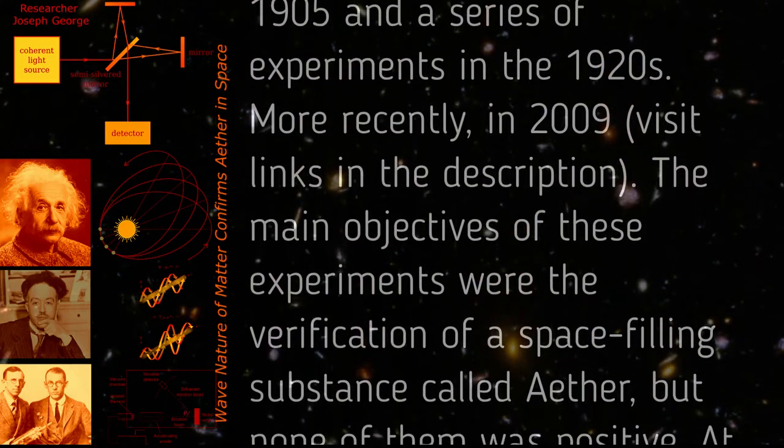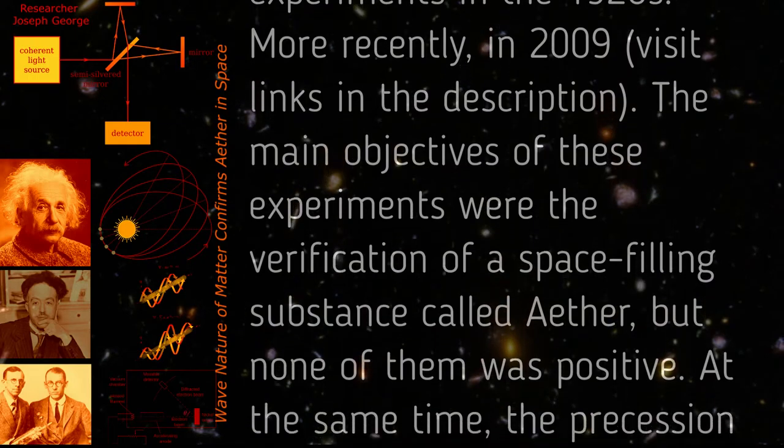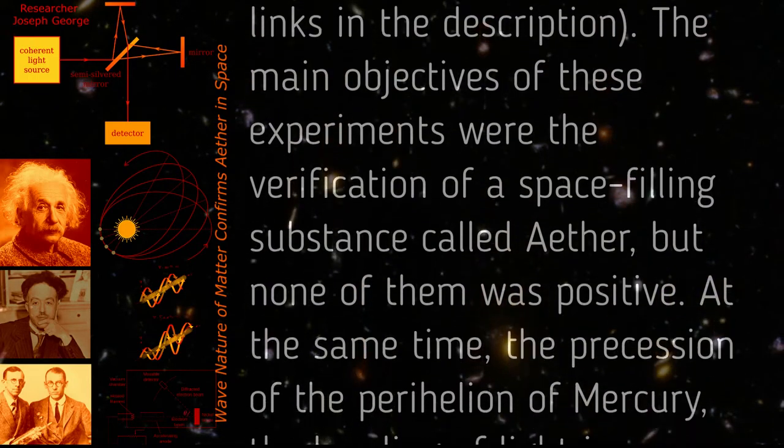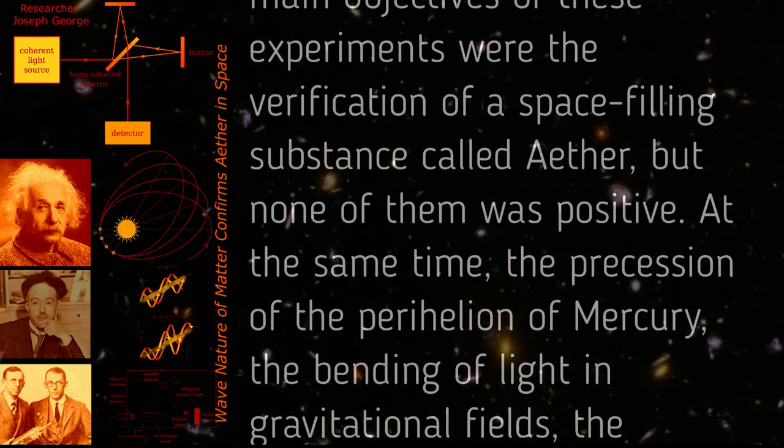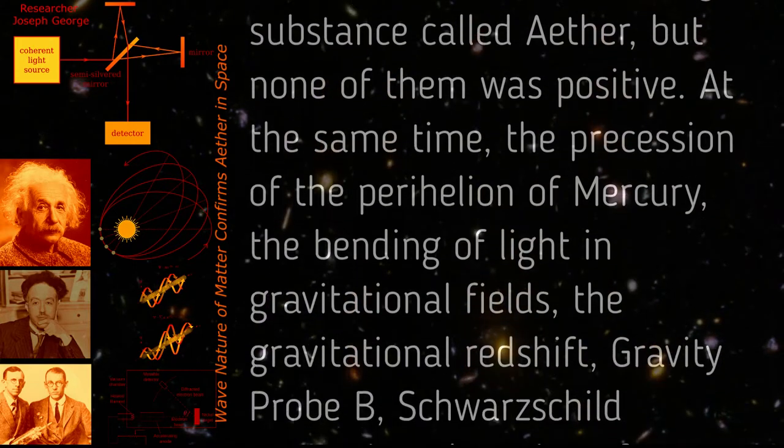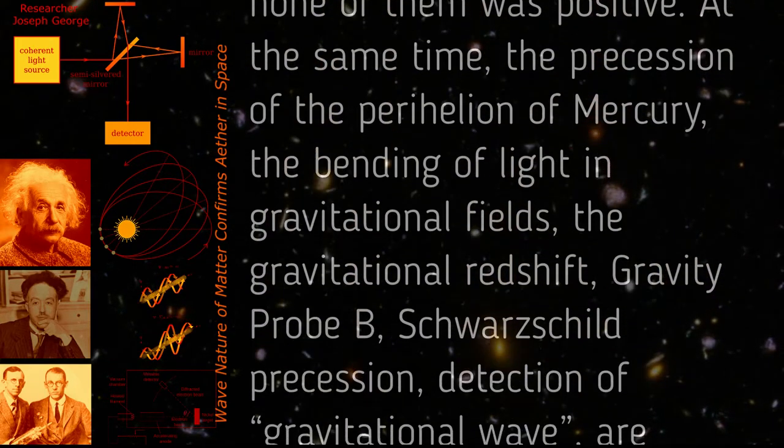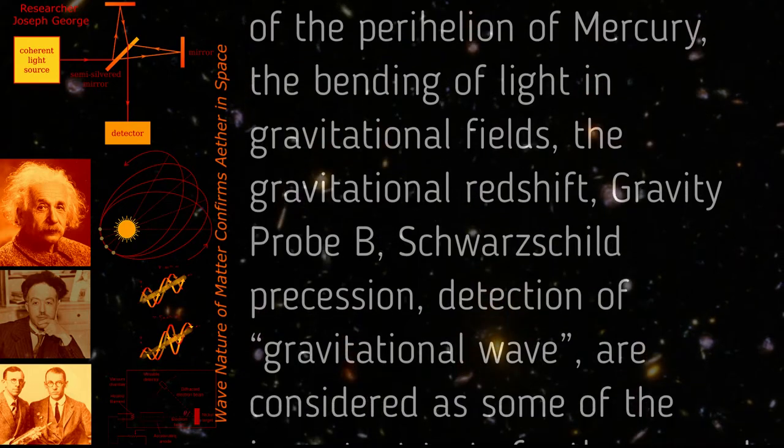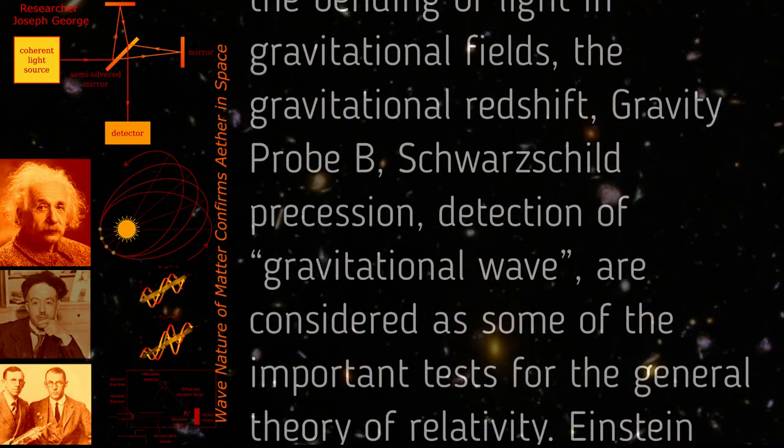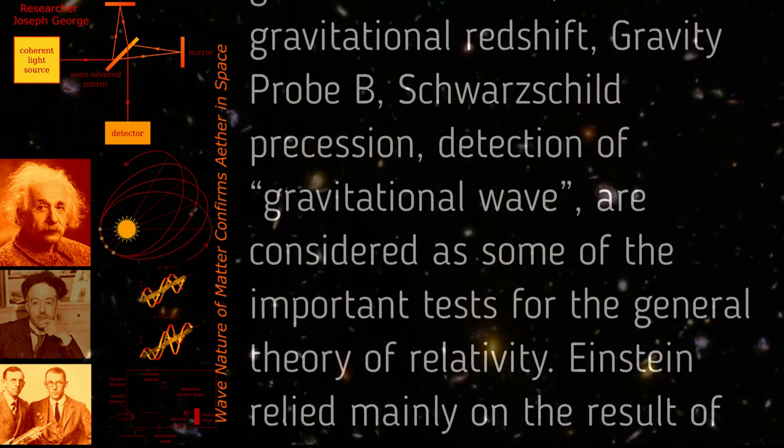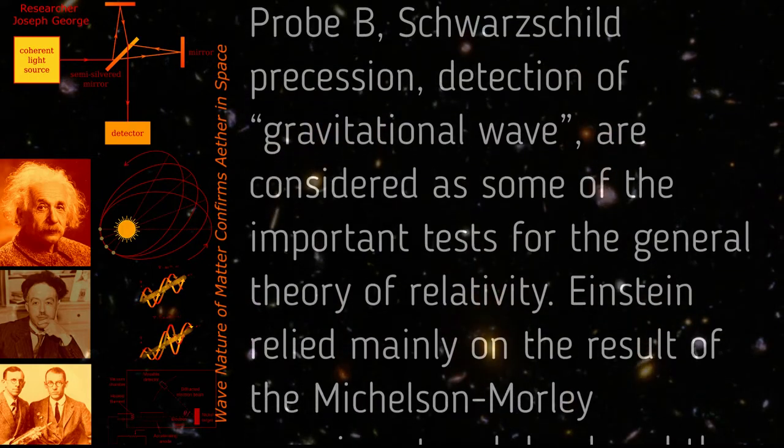At the same time, the precession of the perihelion of Mercury, the bending of light in gravitational fields, the gravitational redshift, Gravity Probe B, Schwarzschild precession, and detection of gravitational waves are considered as some of the important tests for the general theory of relativity.